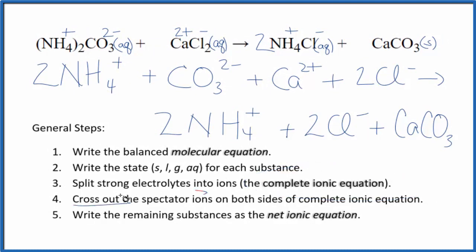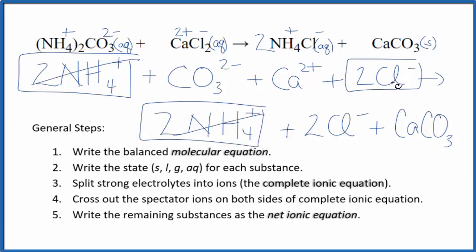Now we can cross out spectator ions. They're on both sides of that complete ionic equation. They haven't changed, so we're not interested in them. So I see two ammonium ions in the reactants and two in the products. I can see two chloride ions in the reactants and in the products. Cross those out.